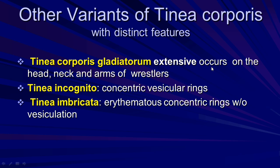Other variants of tinea corporis include tinea imbricata and tinea concentrica. Tinea imbricata is extensive, occurring on the head, neck, and arms from tinea glabosa. Tinea concentrica presents with concentric vesicular rings, or erythematous concentric rings without vesiculation.